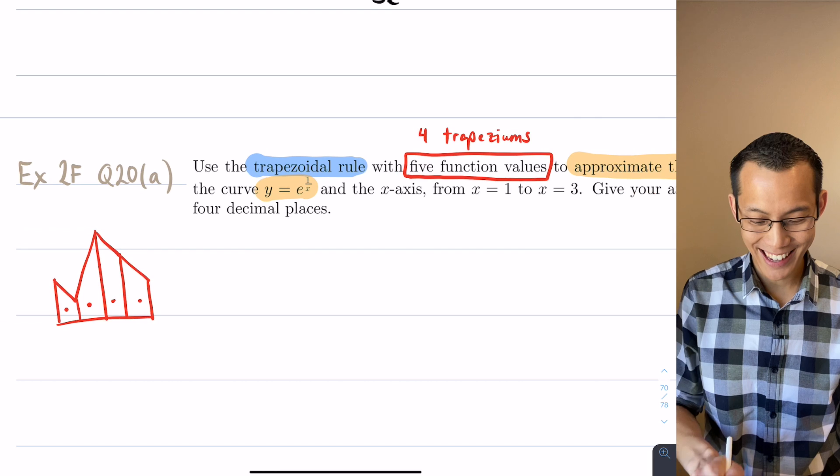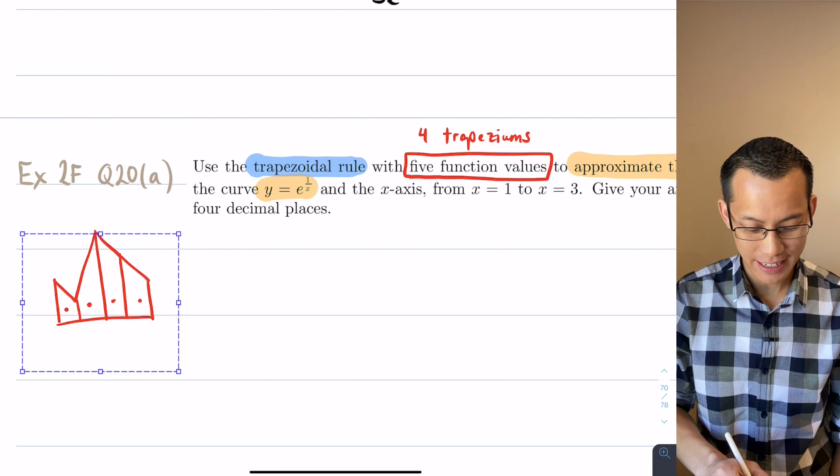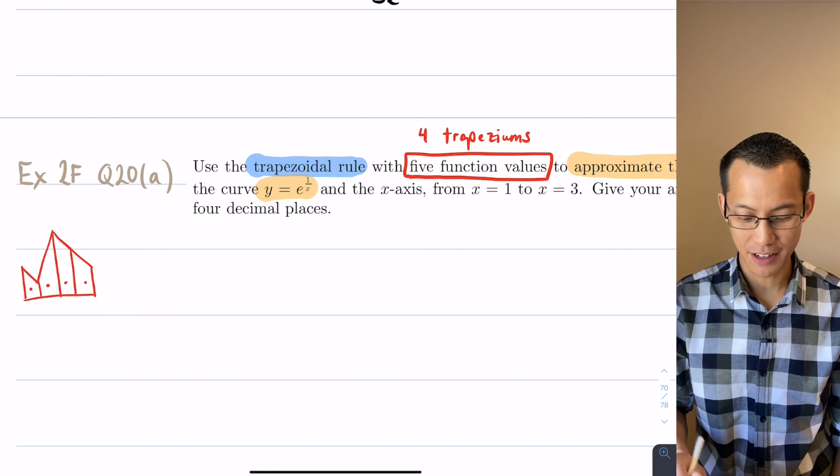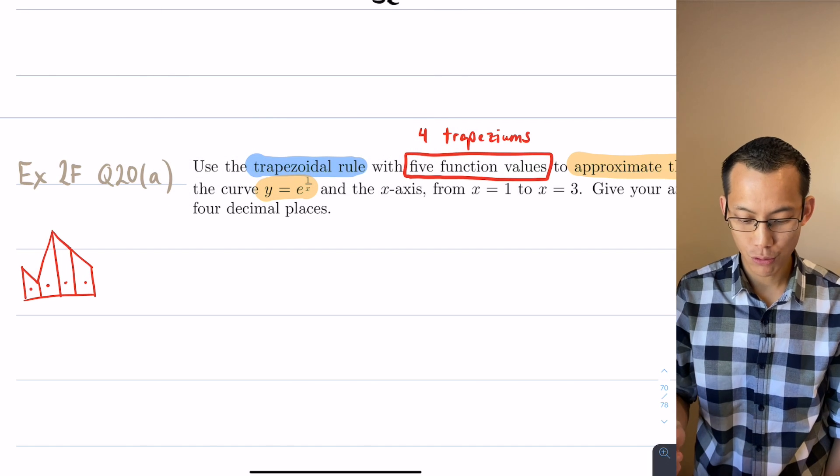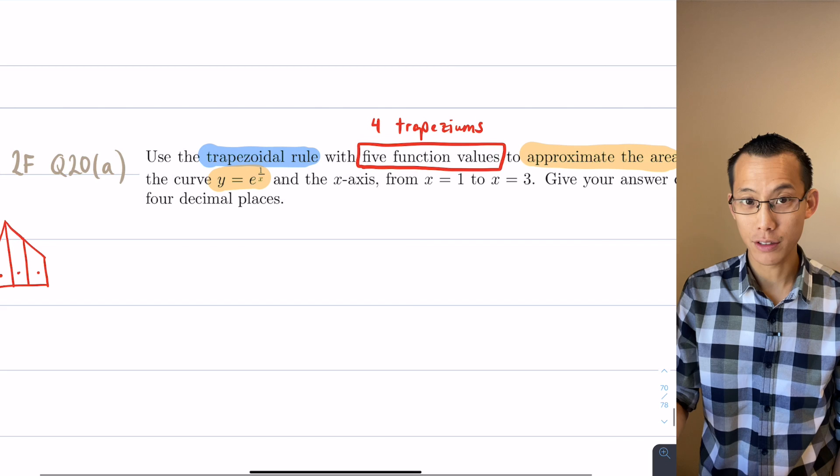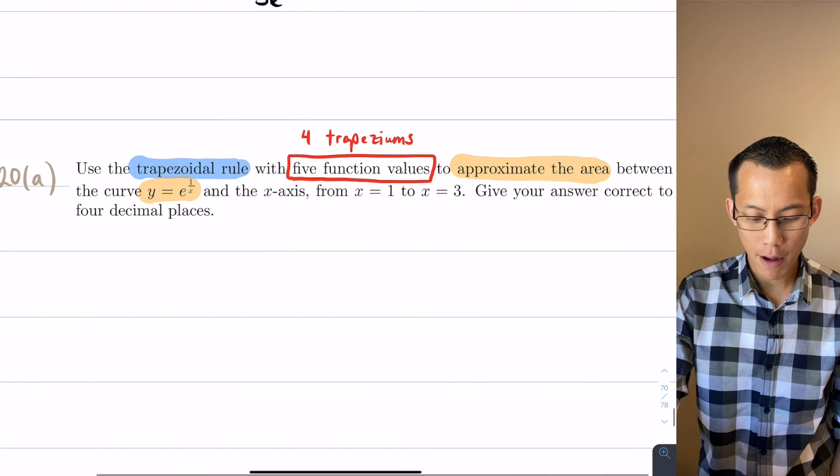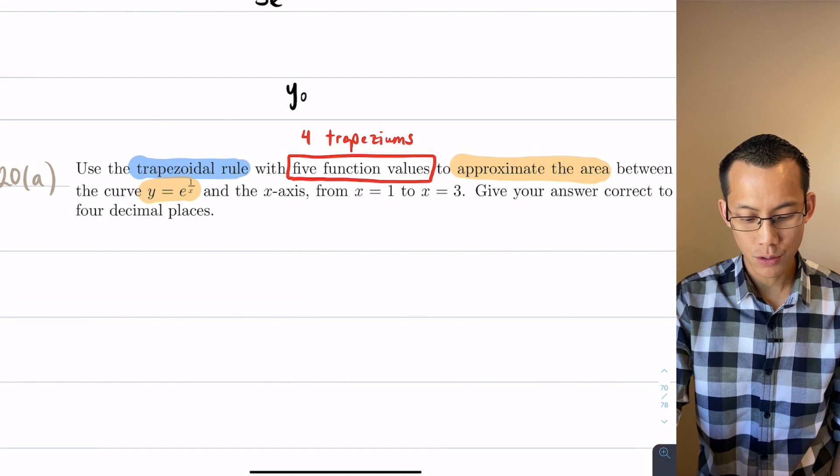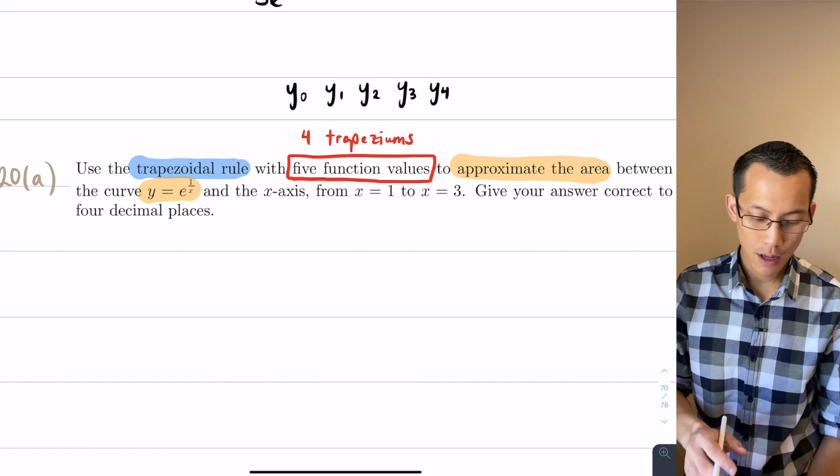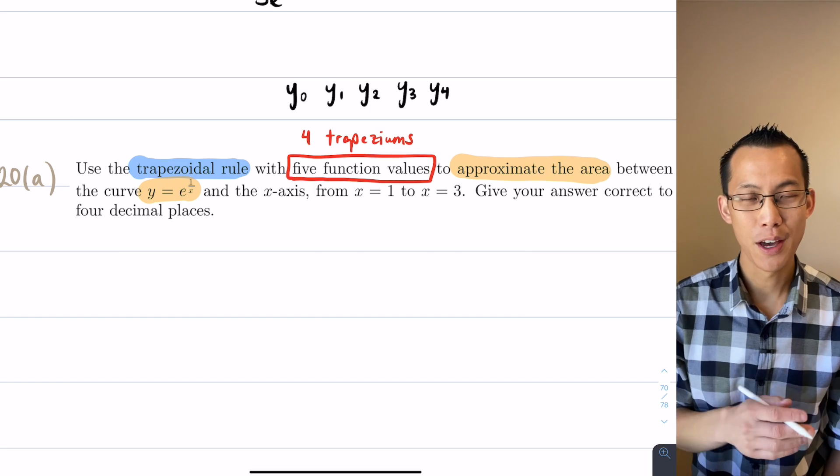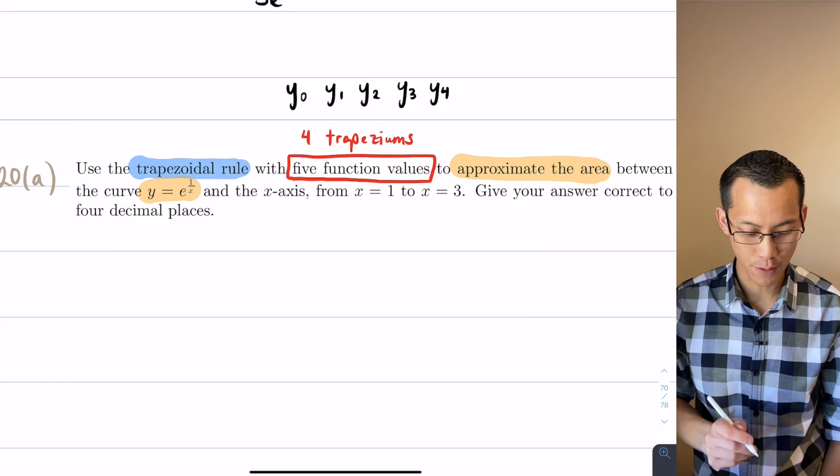So that's a lot to take in, but now we're pretty much ready to actually begin the question. Now what I'm going to do is I'm going to rehearse for you what is the trapezoidal rule for five function values. I'm going to call my function values y0, y1, y2, y3 and y4. You might recall that we start off counting at zero so that the final value matches up with the number of trapeziums that we've got.